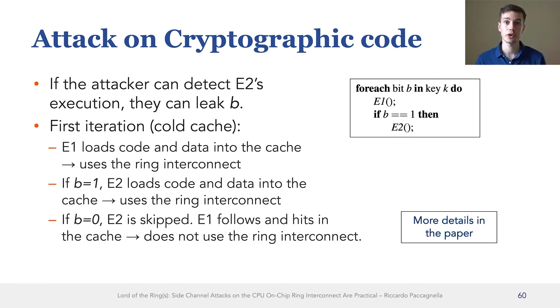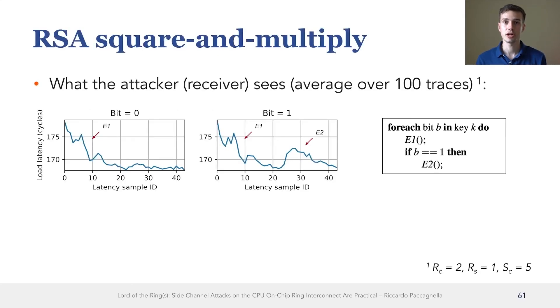In the paper, we provide many more details about how this approach can be generalized, also to multiple iterations. But for now, I want to show you the results of using this attack against the RSA square and multiply routine. As you can see from these plots, an attacker can tell whether the bit was one or zero by looking at the right hand side of the plots.